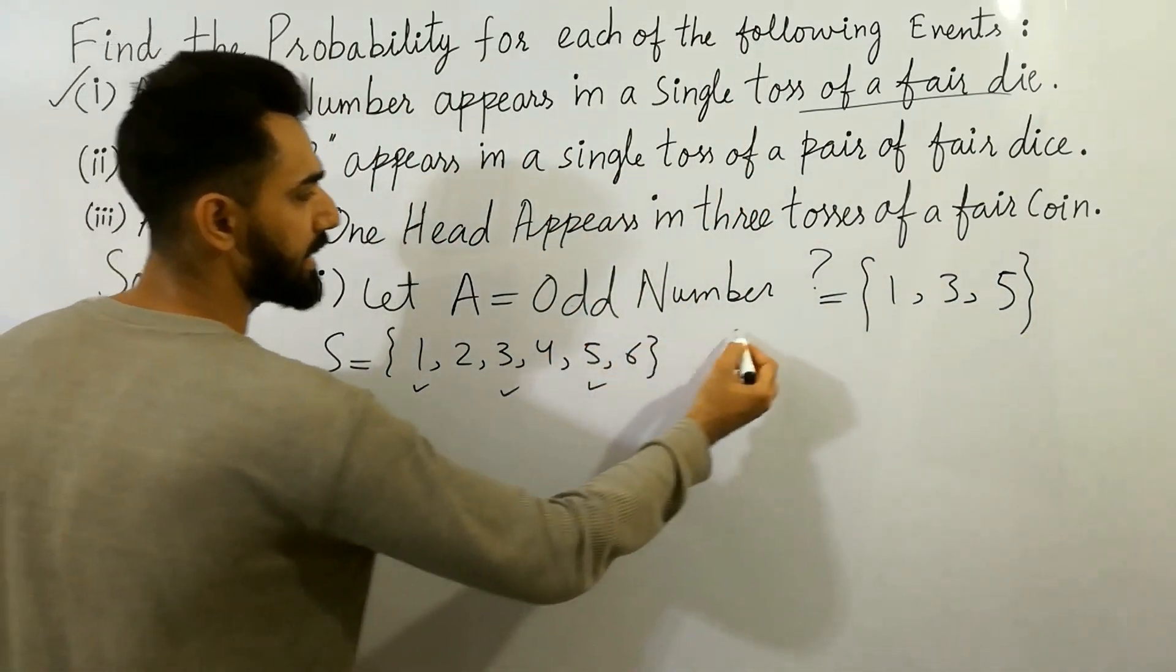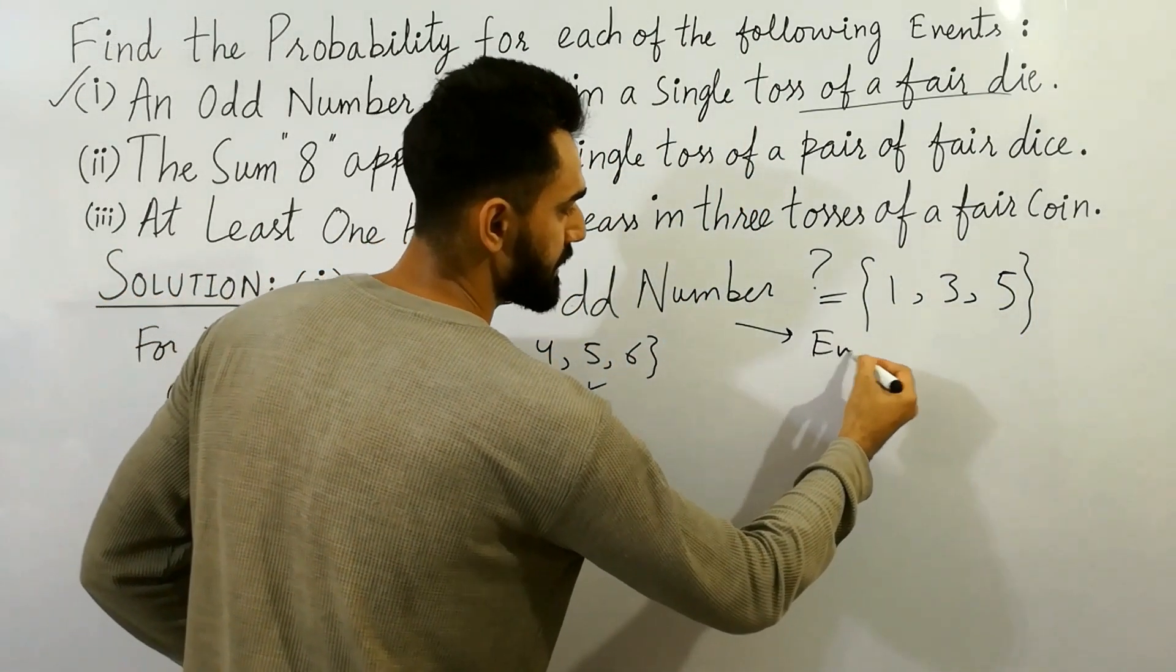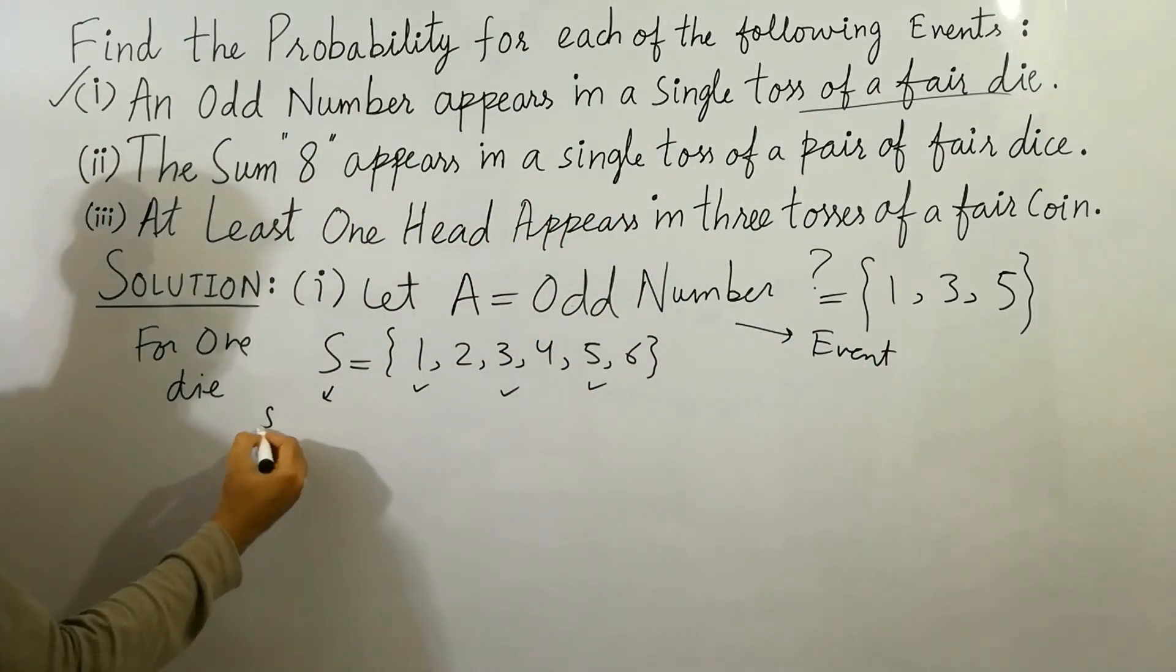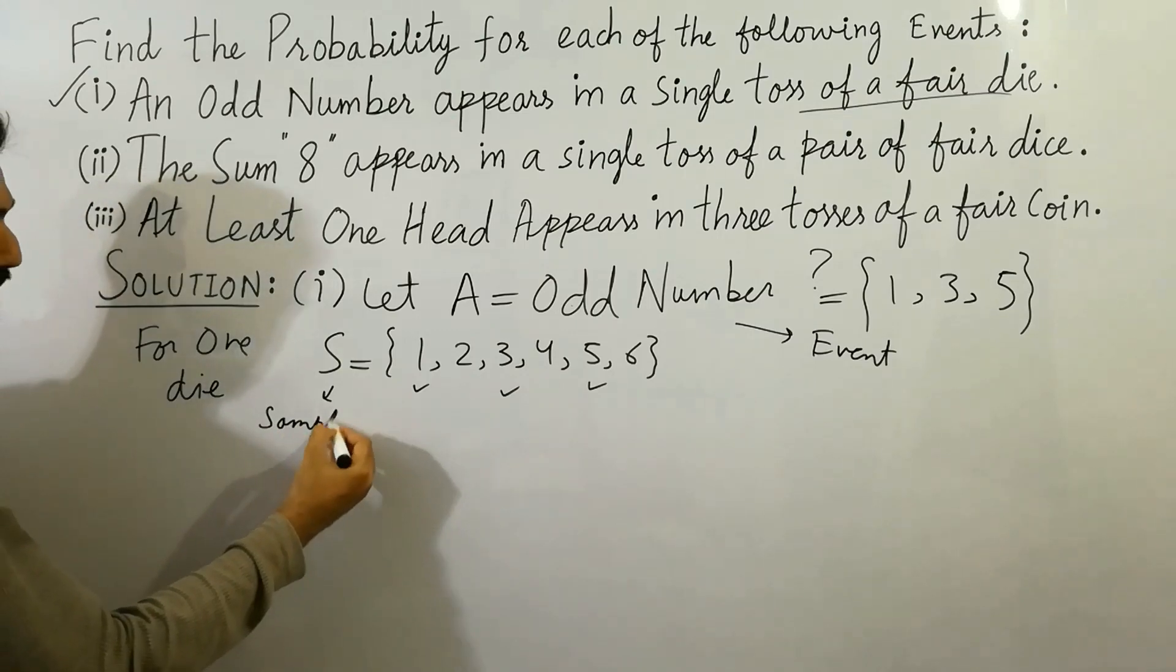You must remember, this A is the event. And this is the sample space. This is the total sample space.